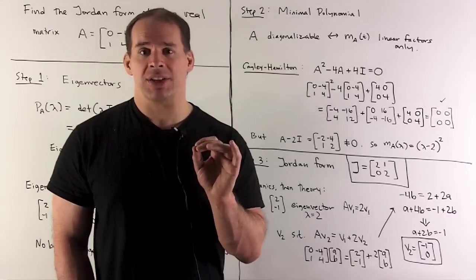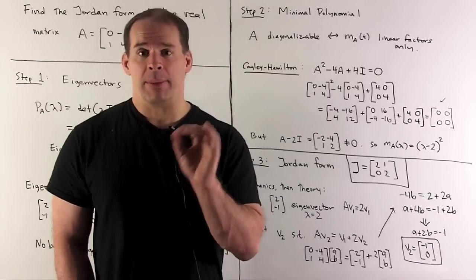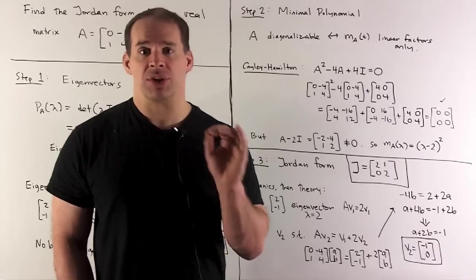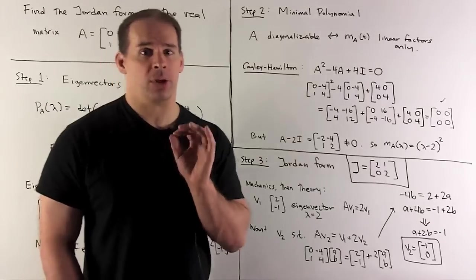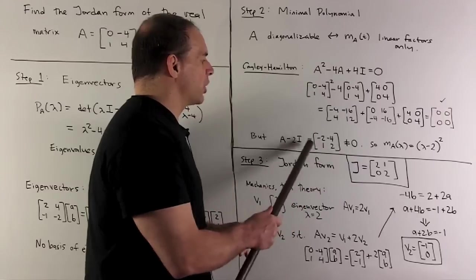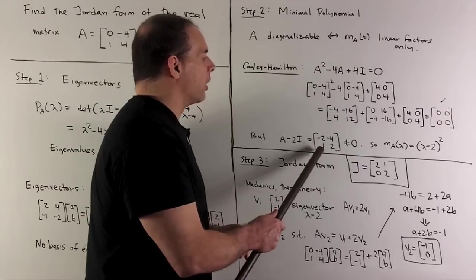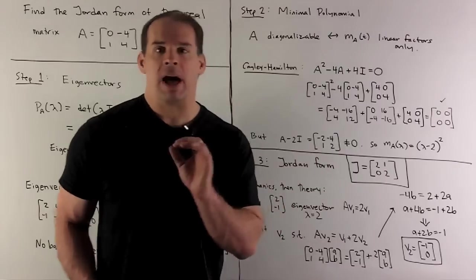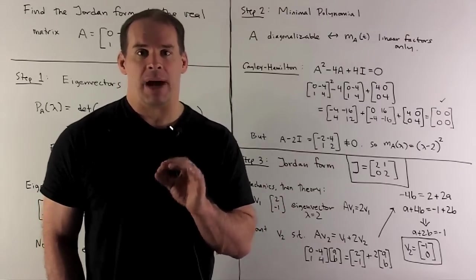So, in our special case, the options are (λ - 2)² or (λ - 2). If we try λ - 2, I'm looking at the equation A - 2I equals this matrix, and that's definitely not equal to zero. So, my minimal polynomial has to be (λ - 2)².